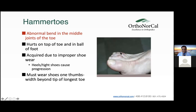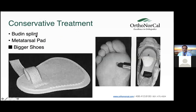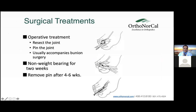Hammer toes are a bending at the top of the little toes, occurring for genetic reasons, bad shoes, or ligament rupture. When caused by neurological problems, they're called claw toes. Make sure when measuring shoes that there's one thumb-width beyond the longest toe — which isn't always the big toe. Conservative care includes a Budin splint or a metatarsal pad along with bigger accommodative shoes. Operative treatment involves making an incision on top, taking away part of the bone, and pinning the toe for about four to six weeks.